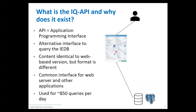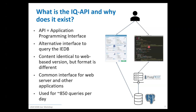What the API provides is access to the same exact set of data, but more programmatically through an application called PostgREST — sometimes referred to as Postgres-T — which is an open source, publicly accessible, widely used interface to access data. It is the same data as on the website, just formatted in a more programmatic, friendly format. As you can see, over the last six months it's used for approximately 650 queries a day, if not more.